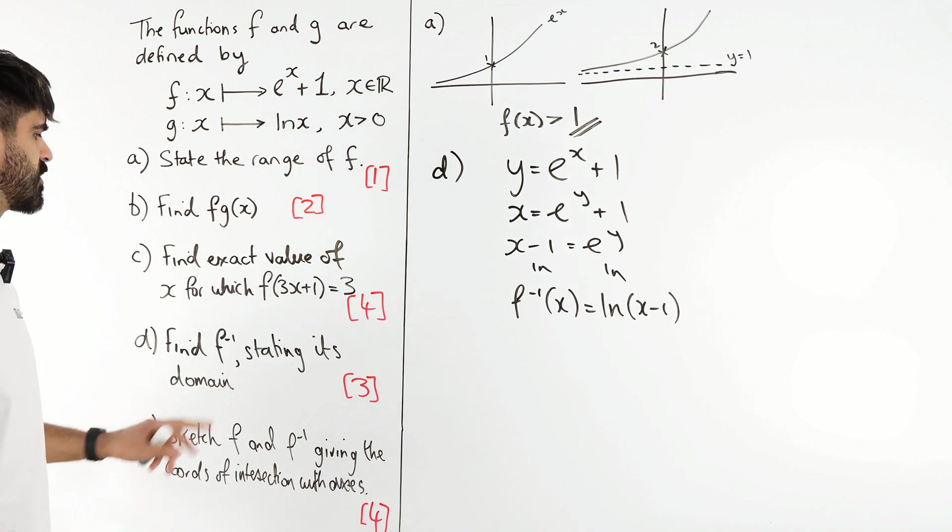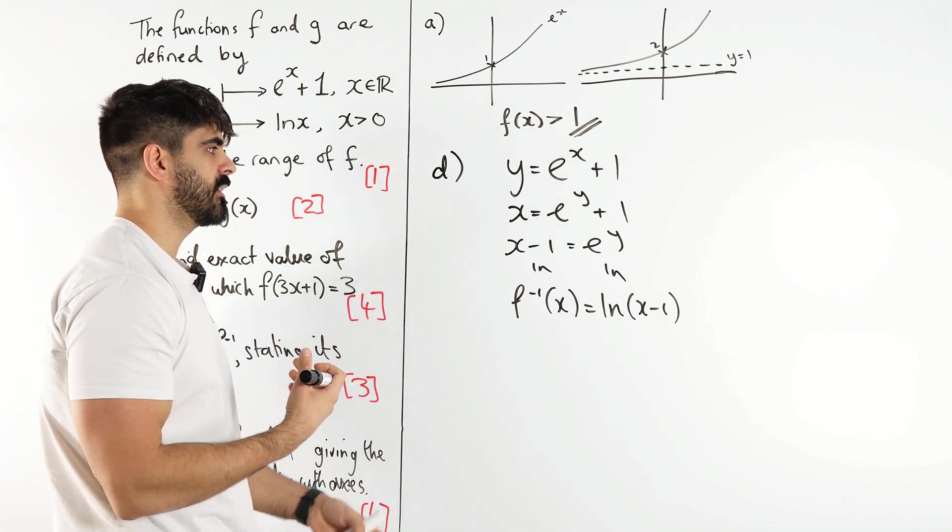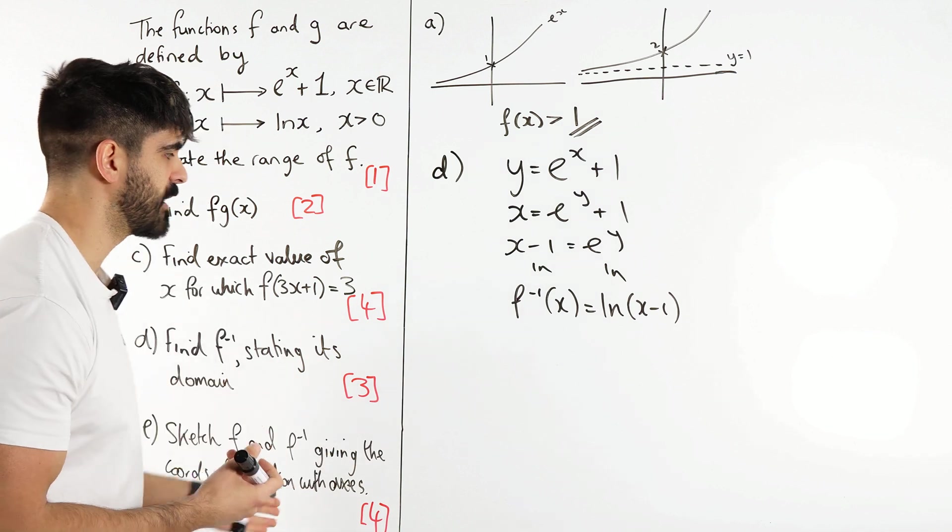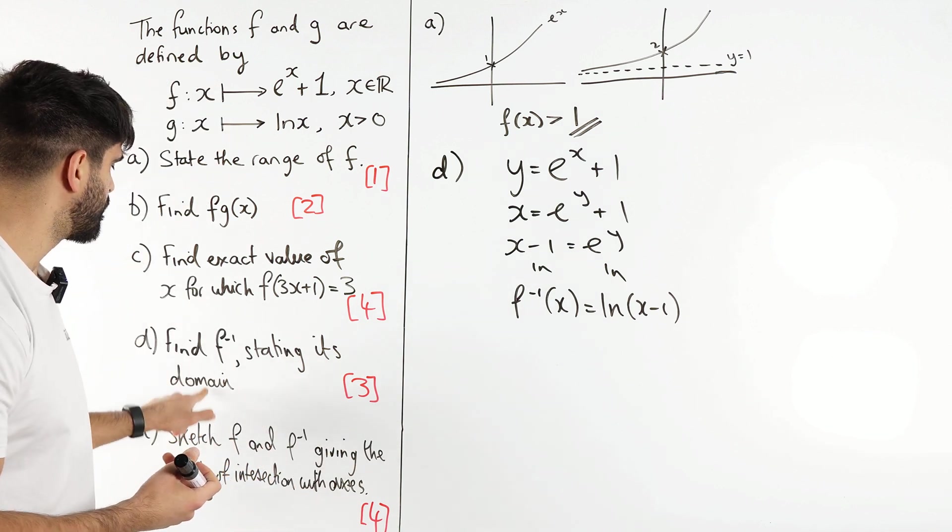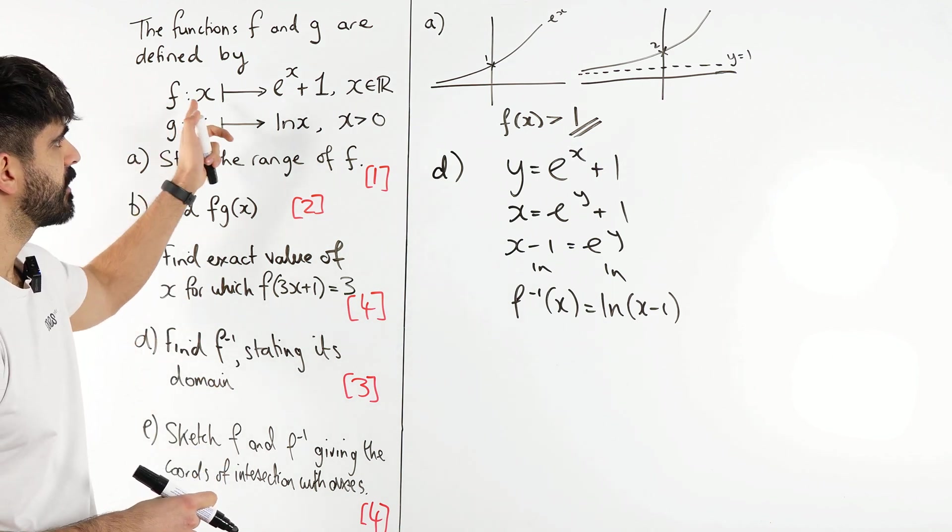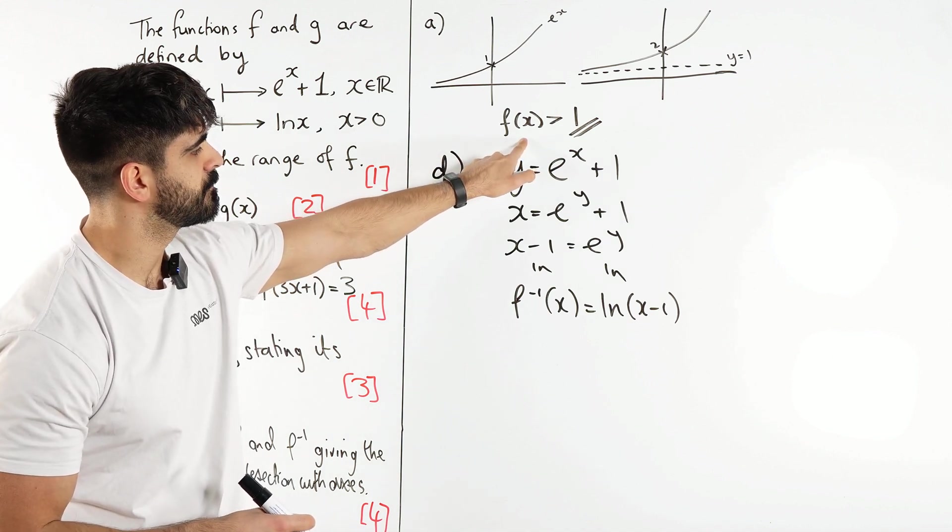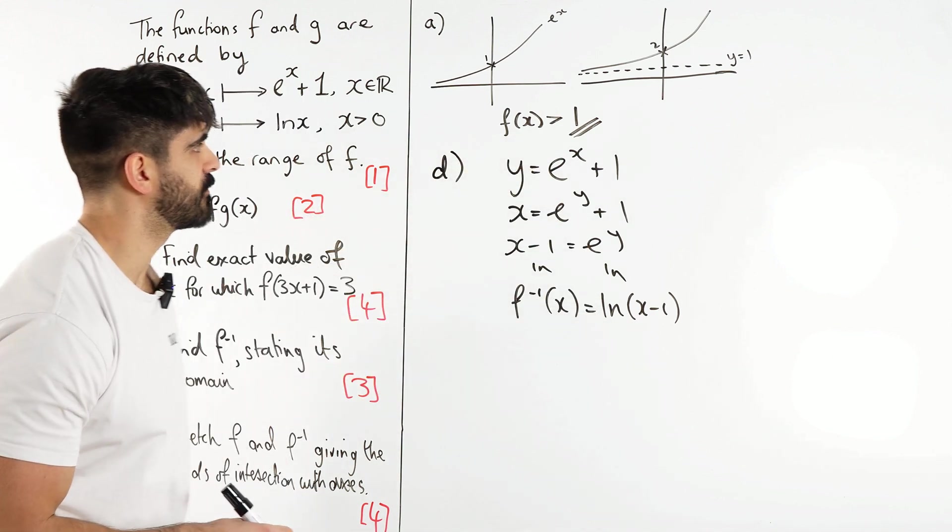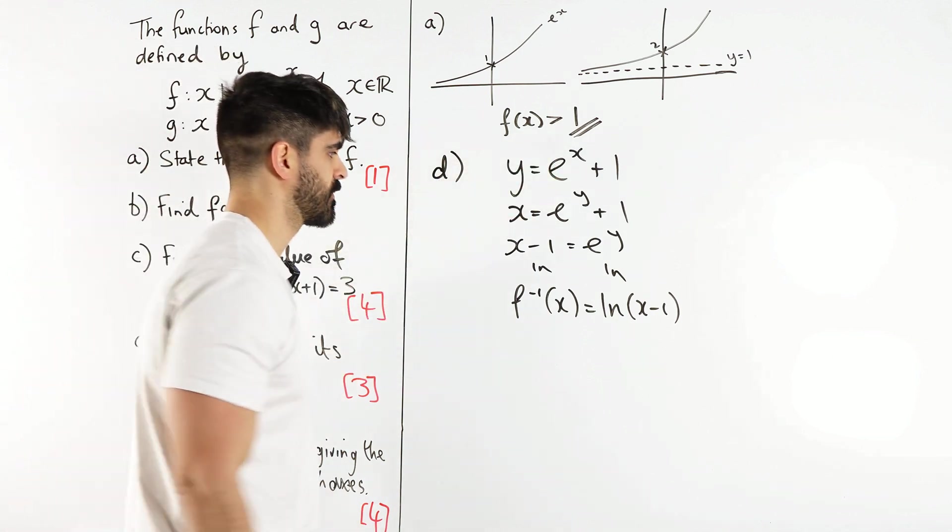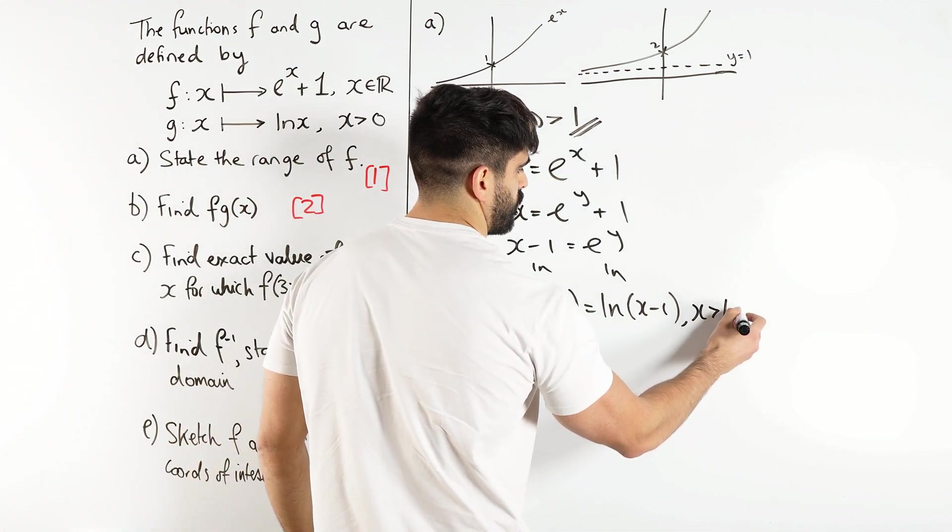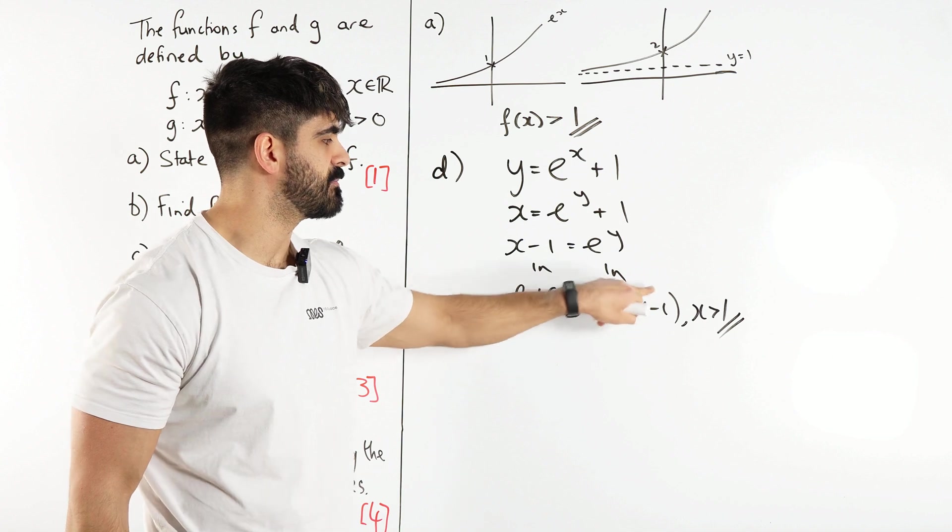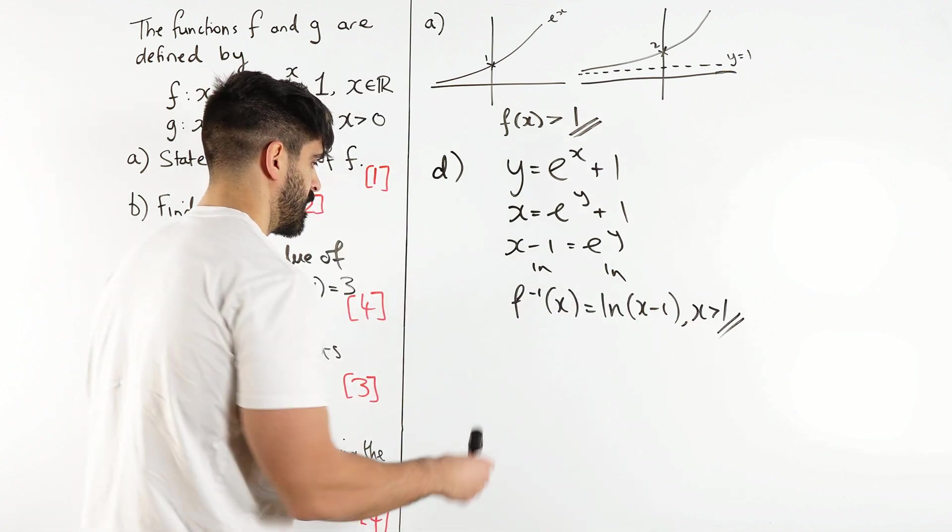And it does say to state the domain. Now because we switch the x and the y, what was the domain is now the range, and what was the range is now the domain. So if we want the domain of the inverse, the domain of the inverse is the same as the range of f. And we know what the range is. That's just going to be the domain for this. It's just we change f(x), which is y, we just change it to x. So here x has to be bigger than 1. And that makes sense because you can only ln a positive number.